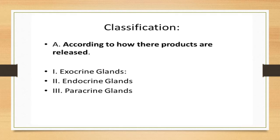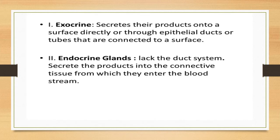How do we classify the glands? Broadly, glands are classified according to the products they release into exocrine, endocrine, and paracrine glands. The exocrine glands secrete their products onto a surface directly or through epithelial ducts or tubes connected to a surface — meaning exocrine glands must have a duct system.